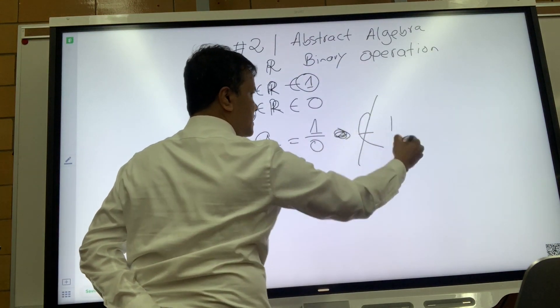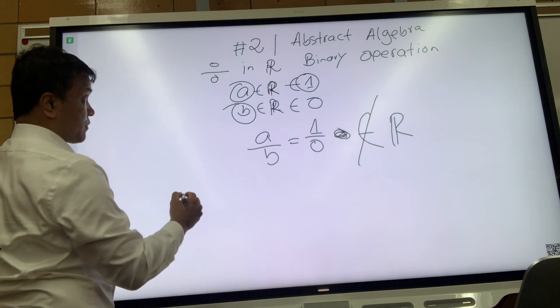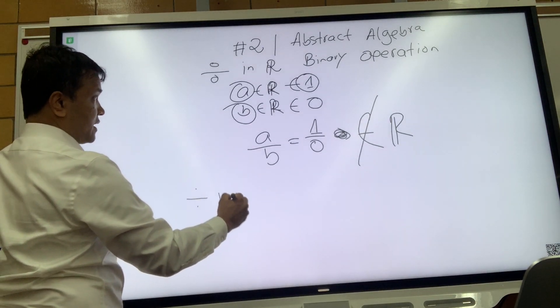Undefined. 1 divided by 0 is not in real numbers. So what can we conclude?